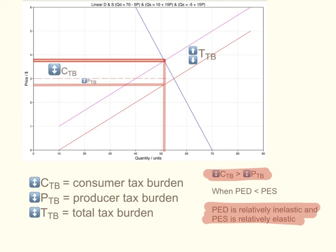This happens when price elasticity of demand is less than price elasticity of supply. The reasoning is that the more elastic your demand or supply, the more flexible you are and the more you can pass the tax burden on to the other party. Here, because consumers are relatively inflexible and can't adjust to price changes, the producer has the ability to pass most of the tax burden to consumers. Unlike the previous diagram, where consumer demand was more elastic and producer supply was more inelastic, the producers could not afford to pass most of the tax burden to consumers and therefore had to bear most of it themselves.